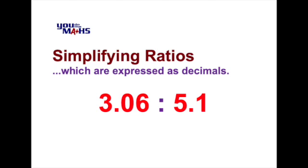In this case 3.06 has two decimal places and to remove the two decimal places what we need to do is multiply not by 10 but by 10 squared, in other words multiply by 100.